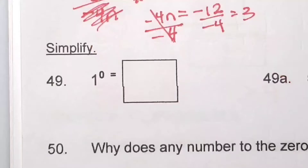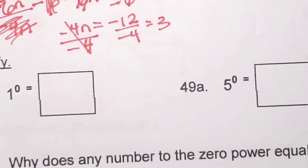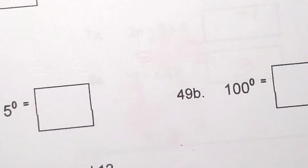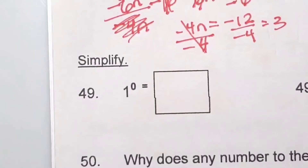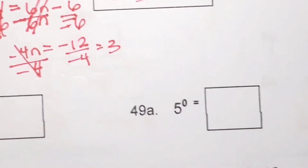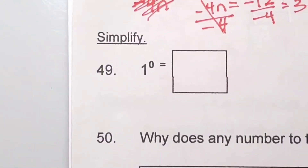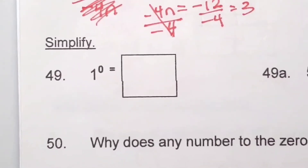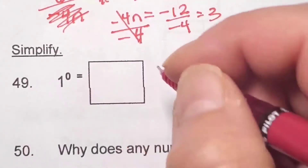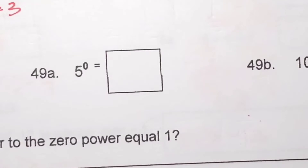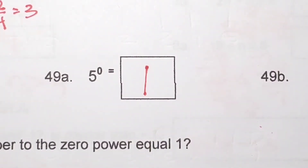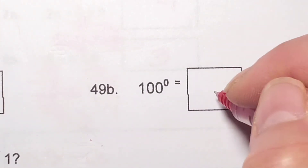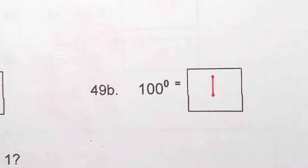Numbers 49, 49a, and 49b are all numbers to the 0 power: 1 to the 0 power, 5 to the 0 power, and 100 to the 0 power. Anything to the 0 power is always 1. So 1 to the 0 equals 1, 5 to the 0 equals 1, and 100 to the 0 equals 1.